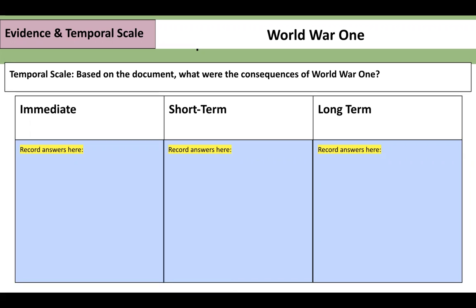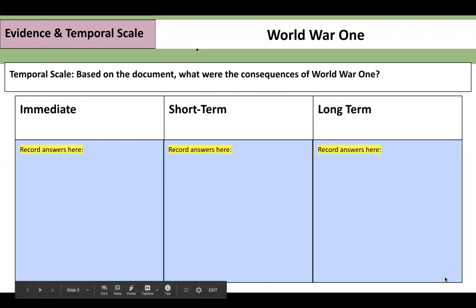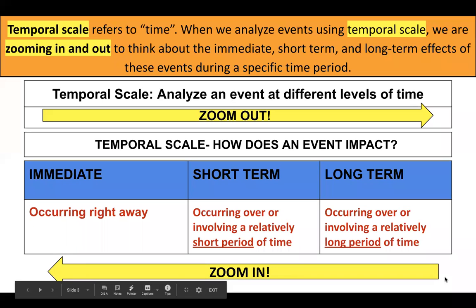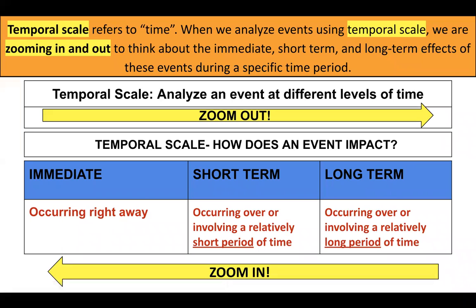For this one we're going to look at the immediate consequences — the things that happened right after the war. Then we're going to look at the short term consequences, things that happened after the war but have some sort of ending to them. And then we're going to look at long term consequences, potentially things that were never resolved or bleed into another event. Another way to think of temporal scale is to remember we're thinking about time, but we're zooming in and out of time.